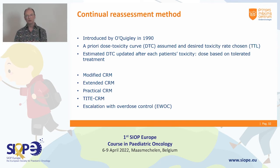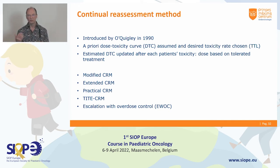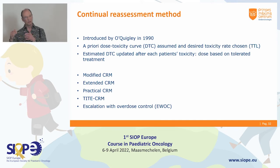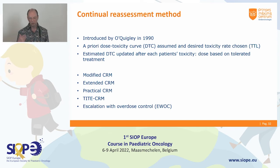Rather than including a cohort of three patients, seeing what happens, and including the next three at another level, the CRM was designed to update where we are with every new patient in the trial — far more sensitive. You don't need to start at the very lowest level; you can start closer to the maximum tolerable dose. It's updating information patient by patient, and we don't have to take a very strong decision at the end — we just want to learn as much as possible. That's the situation of phase one trials.